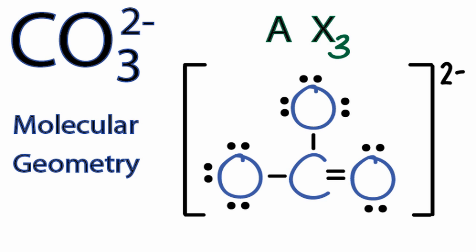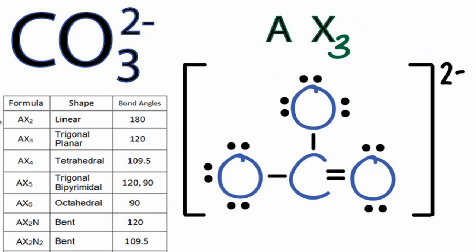Or if you had a table available, you could look it up. As we go down the table, we see AX2, and right below it, that's AX3, which is trigonal planar with bond angles of 120 degrees.